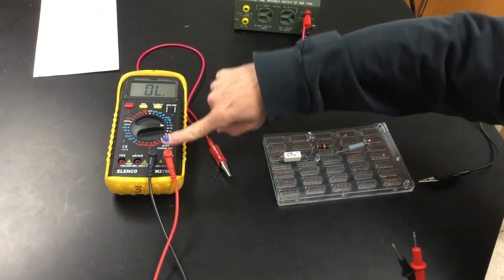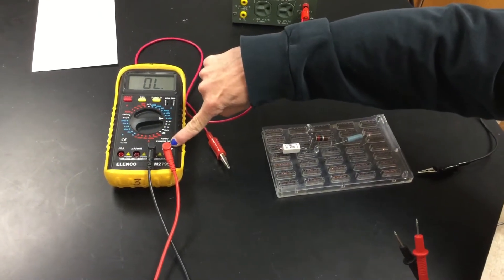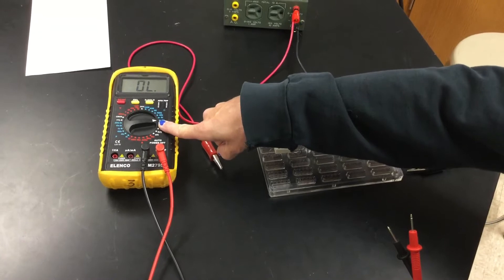So on this meter, you want to make sure the red cord is in the ohm port and that the dial is set to 400.